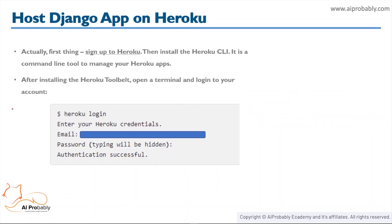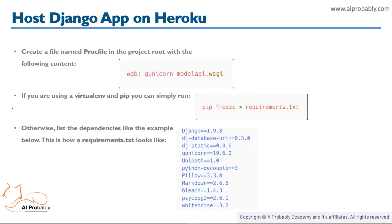The first thing is we need to sign up to Heroku and then install the Heroku CLI, which is the Heroku Command Line Interface — a tool to manage your Heroku apps. After that we need to log into Heroku using the `heroku login` command, and it will ask you for your credentials. After typing your email and password you will be logged in to Heroku.